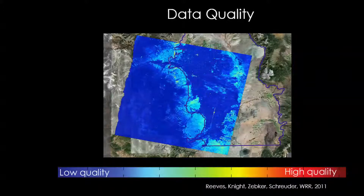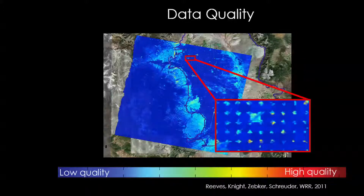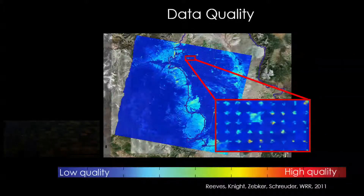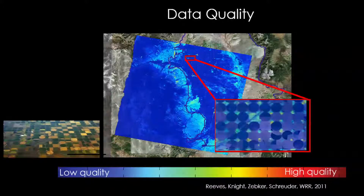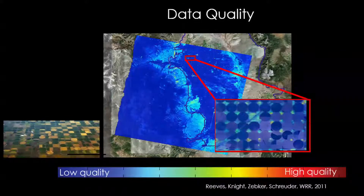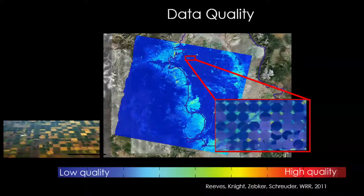But when you zoom in, what you see is this regular pattern where we've got very high quality data. And if you overlay a Google Earth image, what do we find? It's the gaps between the irrigated circles of the center pivot irrigation system. So there were gaps there where no crops were growing, where we could use INSAR to see into the underlying groundwater aquifer. So this ended up being tremendously successful.